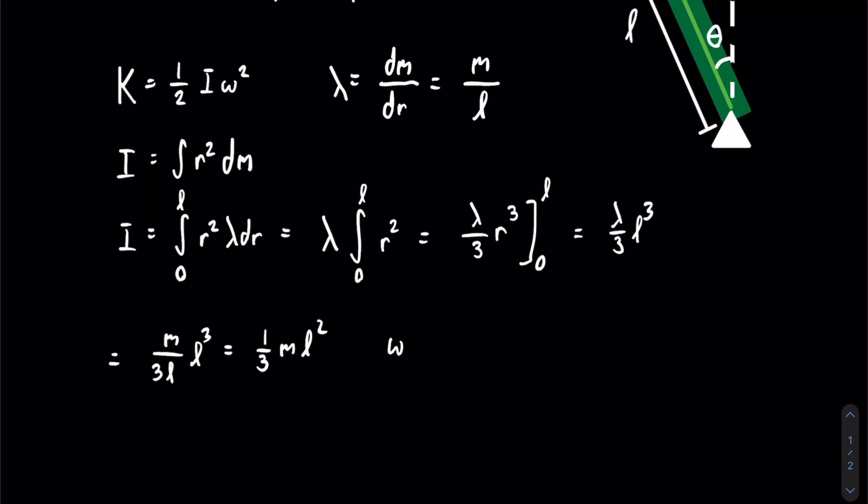It is important to remember that omega is the time derivative of the angular displacement, so omega squared is equal to theta dot squared. This means that our kinetic energy is equal to one-half times one-third mL squared times theta dot squared. Multiplying out, we get that equals one-sixth mL squared theta dot squared.